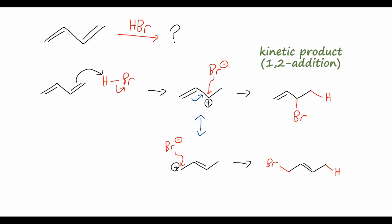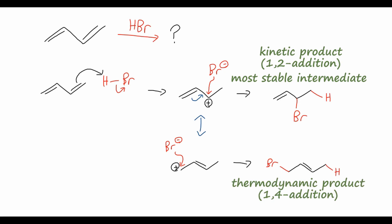This is the kinetic product because we form the most stable intermediate — in this case a secondary carbocation, which is more stable than the primary carbocation in the other intermediate. The second product is called the thermodynamic product, or 1,4-addition, because the H and Br atoms have added along carbons 1 and 4 instead of on adjacent carbons. This is the thermodynamic product because it forms the most stable final product — a disubstituted alkene, which is more stable than the monosubstituted alkene of the kinetic product.